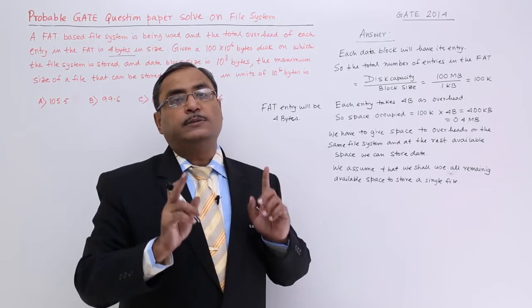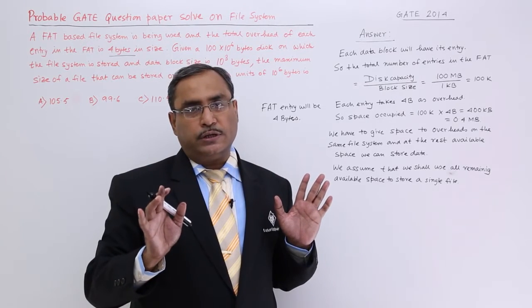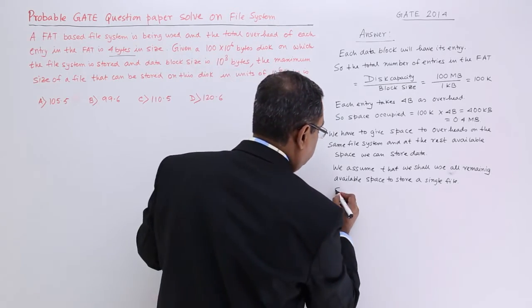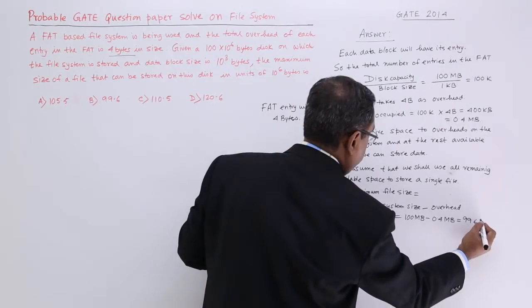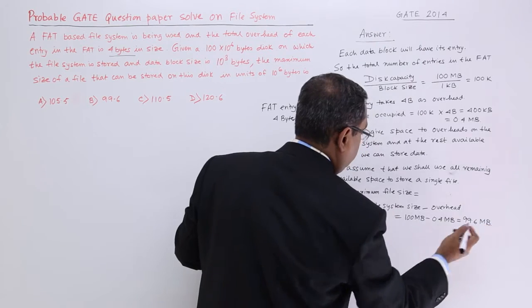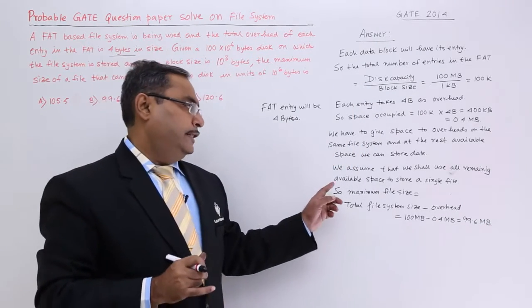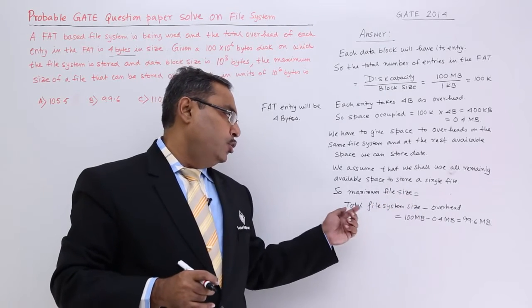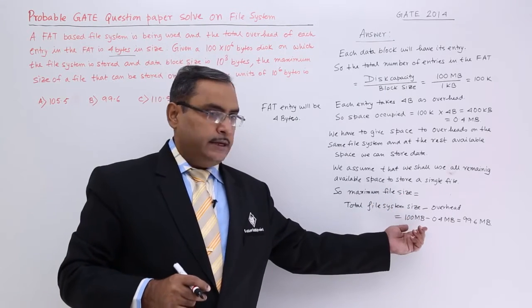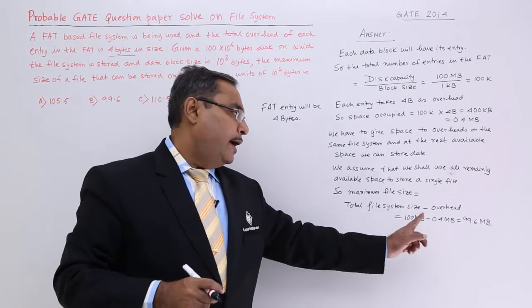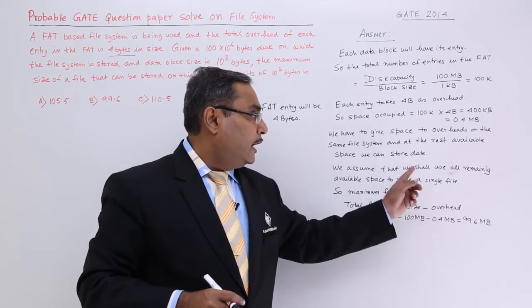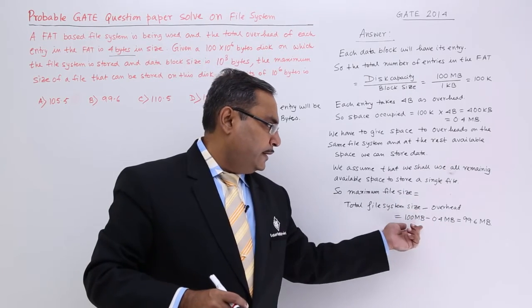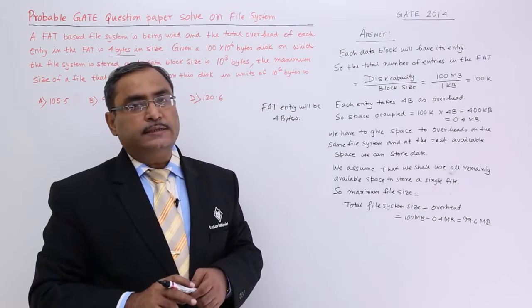I can give you the maximum file size in our calculation. Now let us calculate the file size. Maximum file size possible equals total disk size, that is 100 MB given, minus the overhead, and we have calculated this overhead as 0.4 MB. If you go on subtracting, I am getting 99.6 MB.